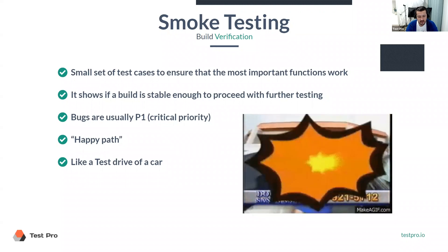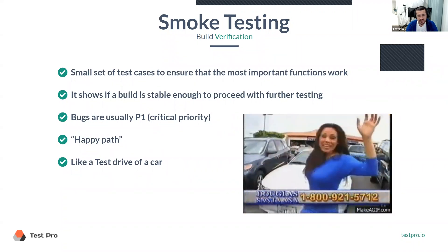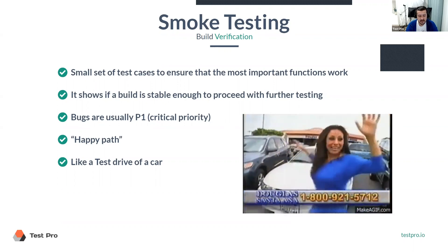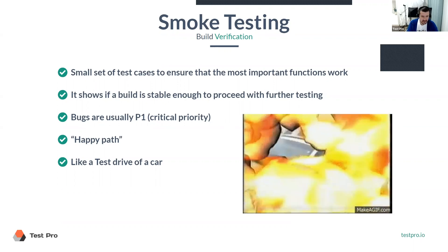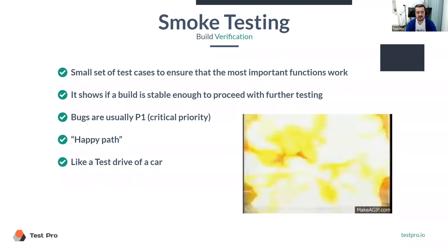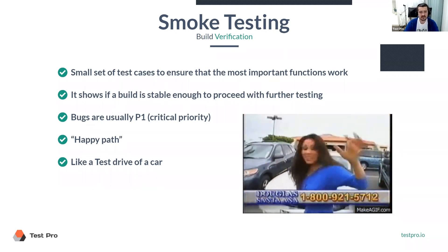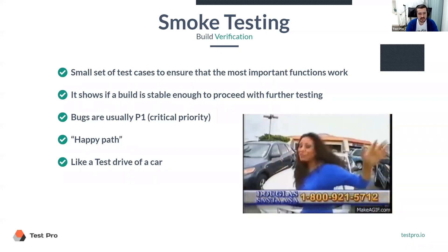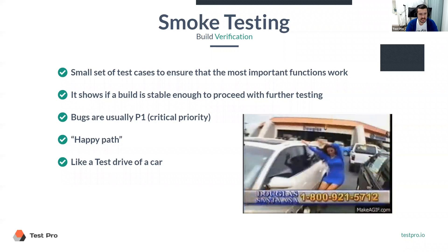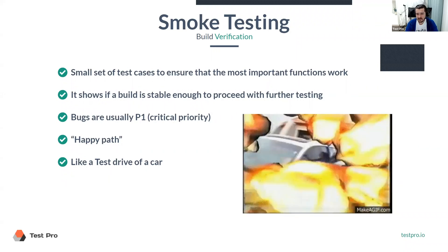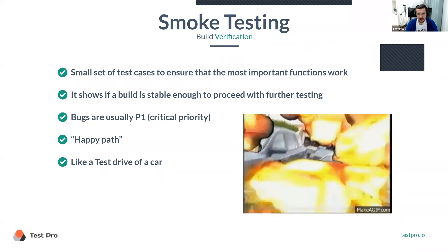For example, if login is broken or creating an account is broken, you cannot even test anything — it's basically dead. That's why it's usually a P1 critical priority. If something like that is broken, there's no point spending any time on it. You need to return it ASAP, create a defect, and ask the developers to fix it immediately — because you basically can't work on anything.